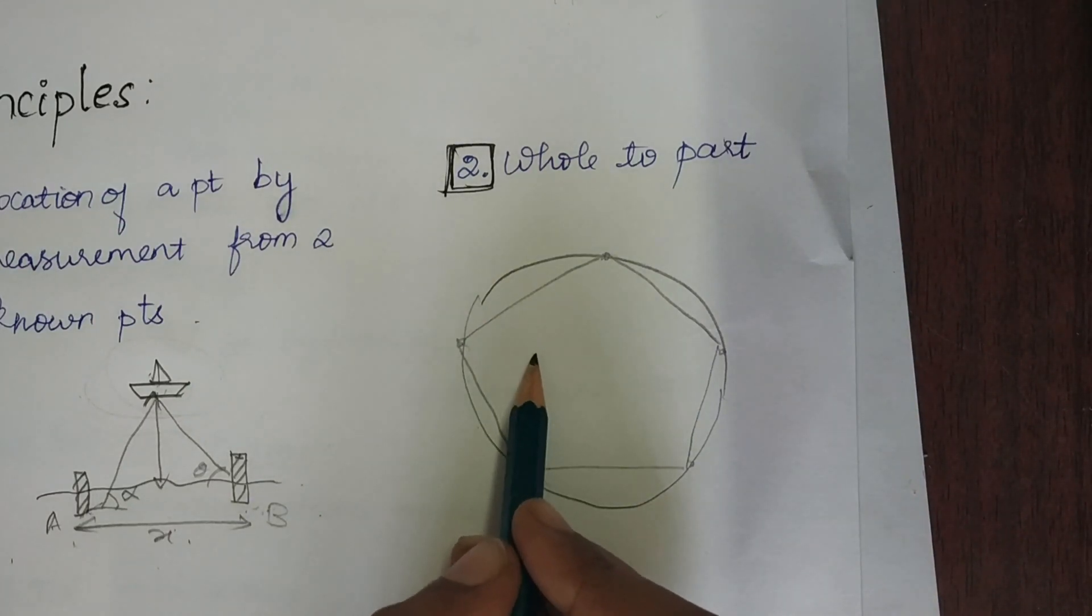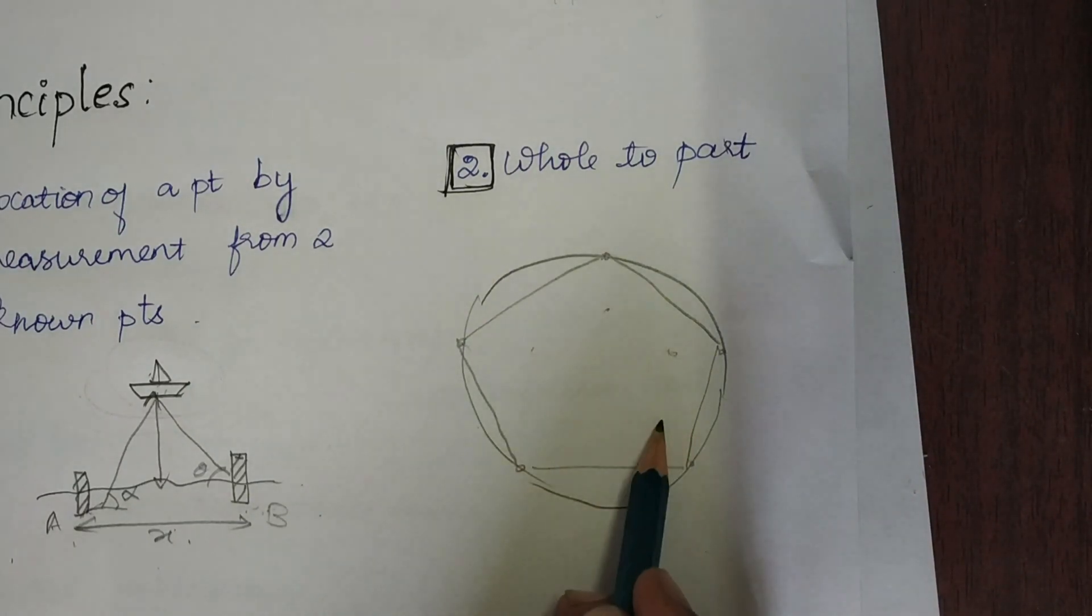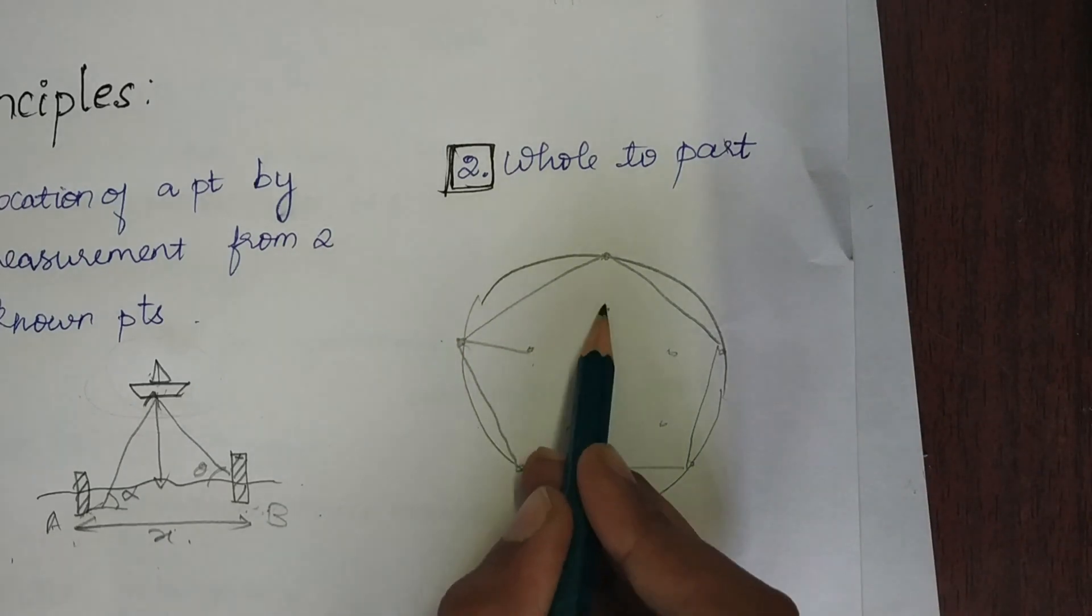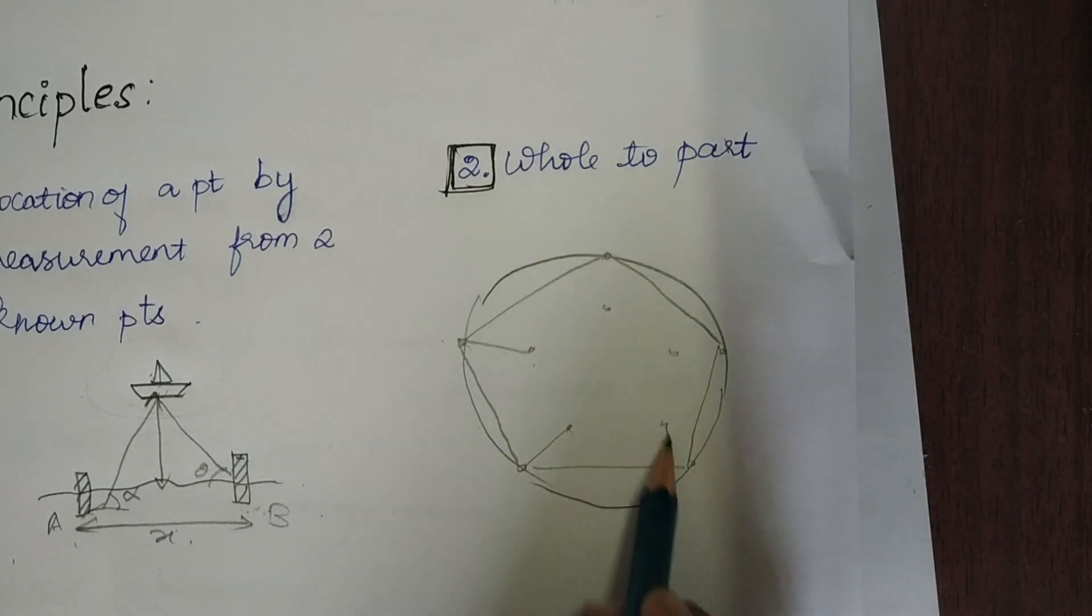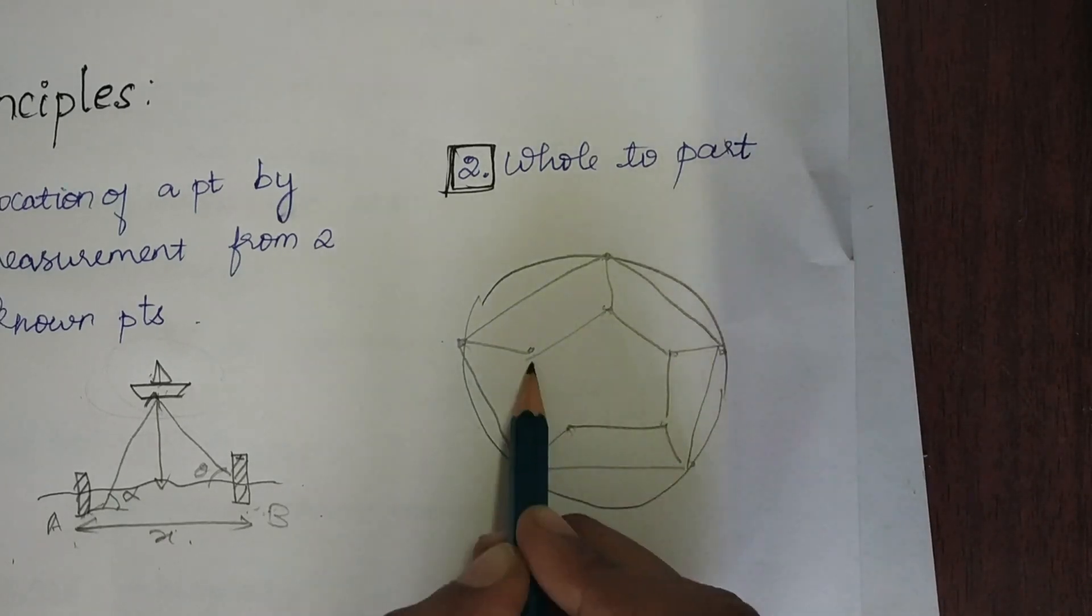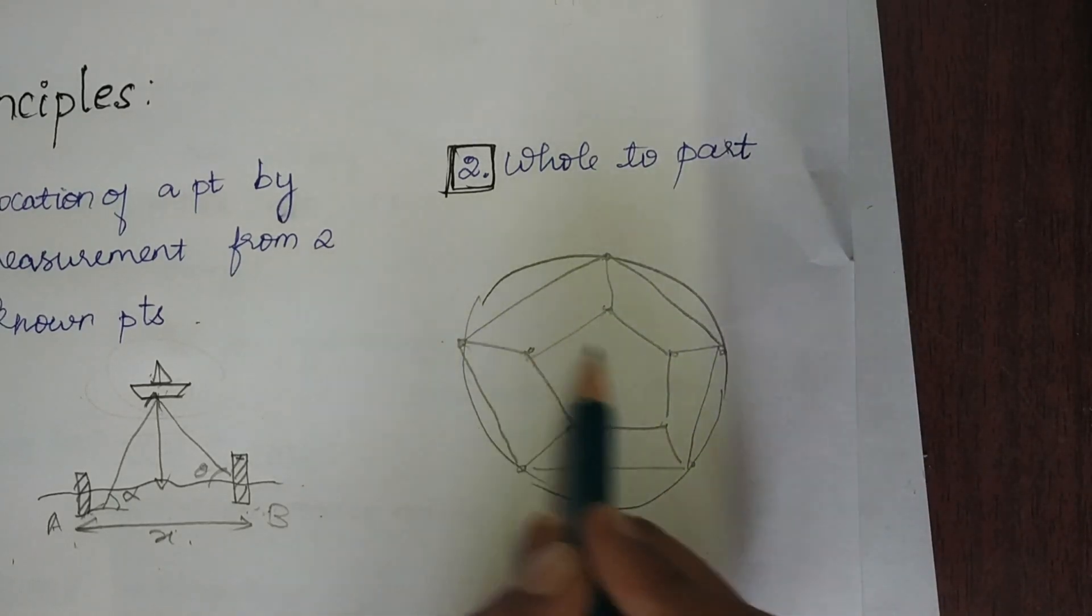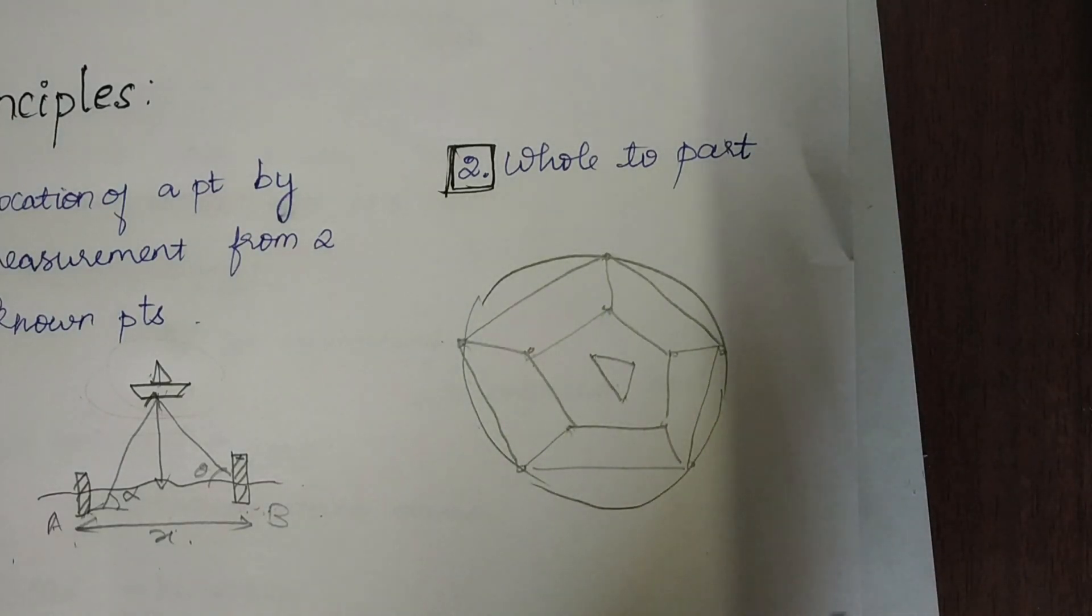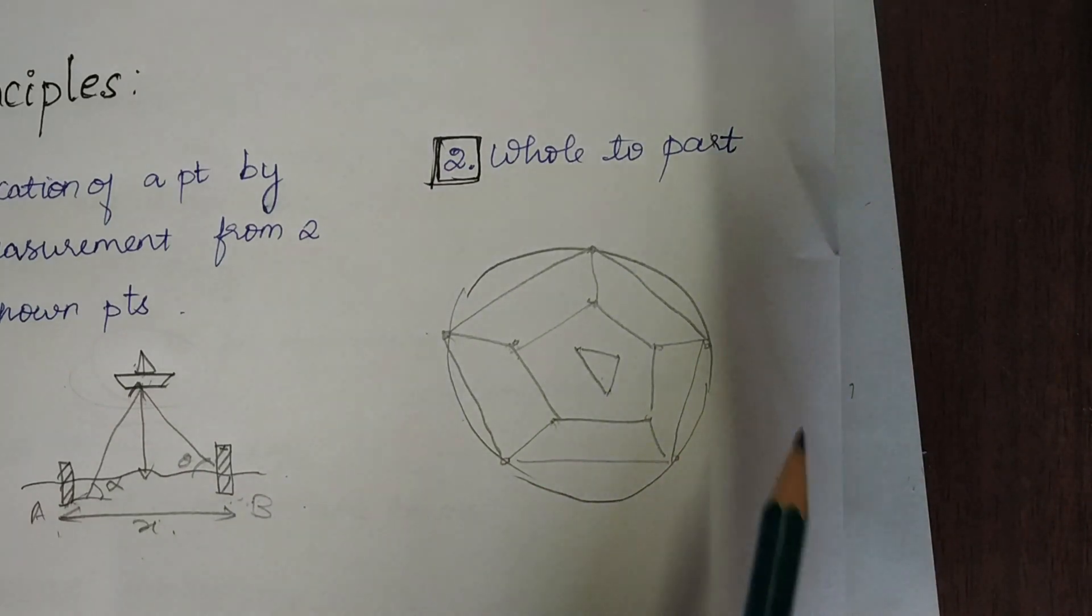These points have been marked with highest precision, and from that I will establish the other control points using these points as reference. Using these as reference, I am establishing these control points, and using these I'll establish points here. By doing this, the accumulation of error is minimized.